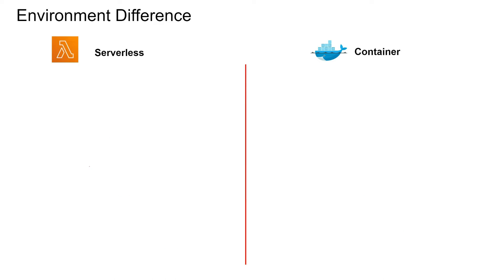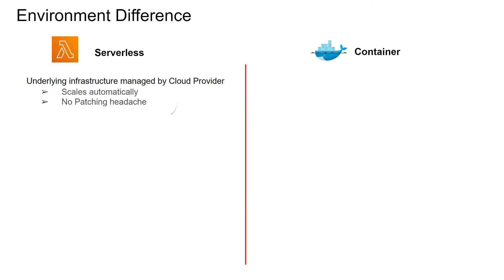Now that we understand what is serverless and what is container, let's take a look at the environment differences. For serverless, the underlying infrastructure is managed by the cloud provider. It scales automatically — you do not have to define an auto-scaling group or schema. And you don't have to patch the underlying hardware; the cloud provider takes care of all that.